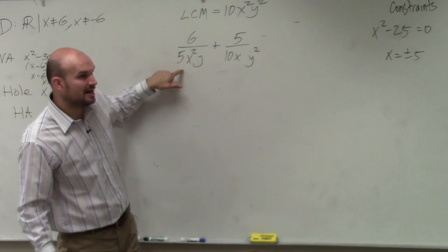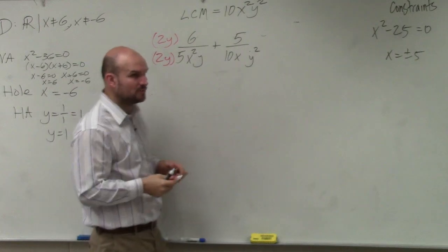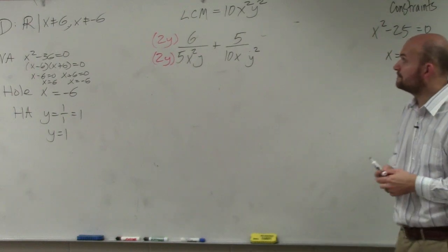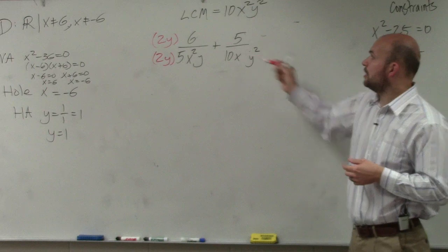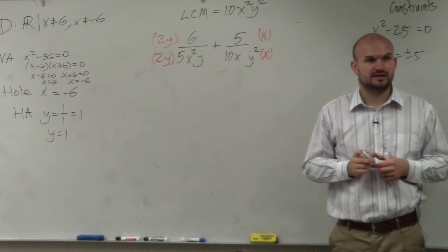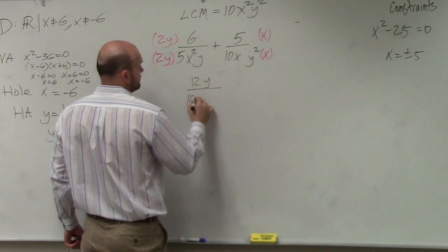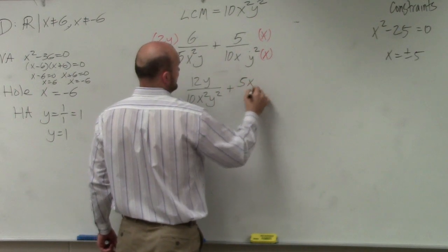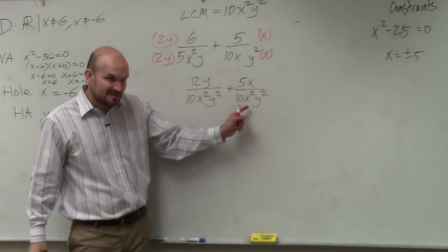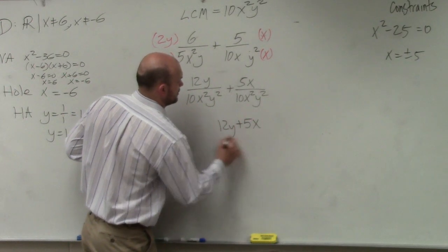I have 5 times x²y, so I need to multiply by 2y on the top and the bottom. We multiply on the top and bottom to produce equivalent fractions — the same fraction in a different format. Over here, I need to multiply by x on the top and the bottom. I now obtain 12y over the least common multiple, plus 5x over 10x²y². Now they have the same denominator, so I apply the operation. However, these are not like terms, so I leave it as the expression (12y + 5x) over the common multiple.